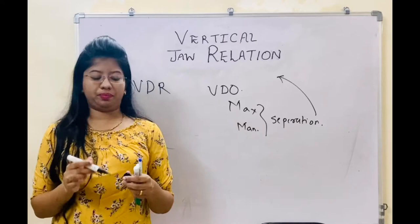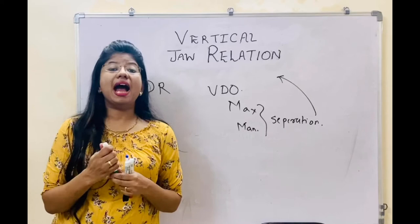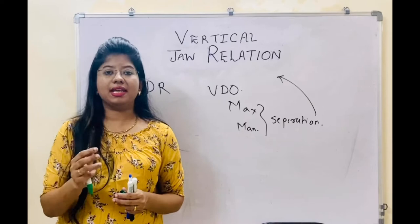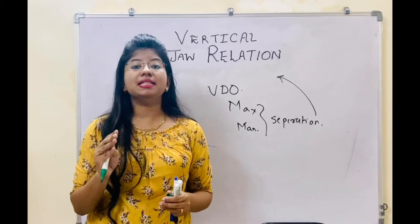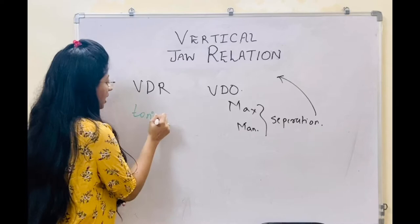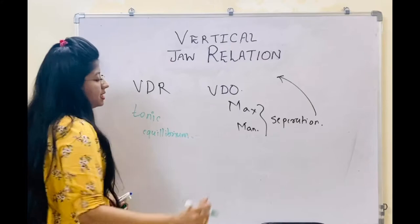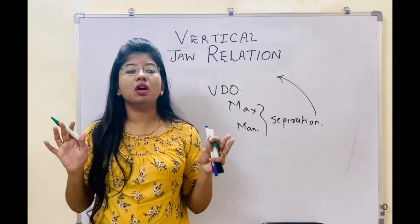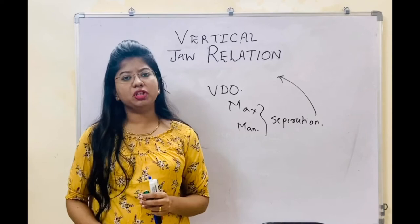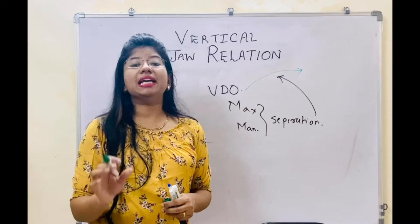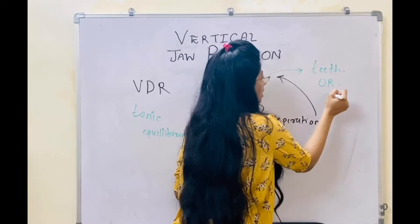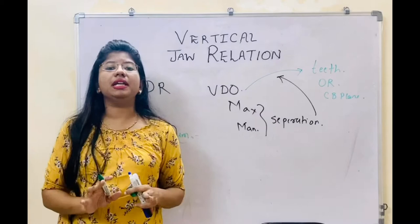Vertical dimension of rest is the position at which the maxilla as well as the mandible, or the jaw, is at the position of rest. What do you mean by position of rest? It means the muscles are in a state of tonic equilibrium — they are in a state of harmony and equilibrium. Then, vertical dimension of occlusion is a condition in which the teeth are touching each other — it can be the teeth, occlusal rims, or central bearing plates. That is vertical dimension of occlusion.